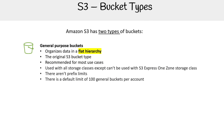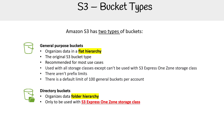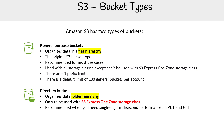Now let's talk about the new bucket type, which is directory buckets. As the name suggests, it organizes data into a folder hierarchy, which is a little different for object storage. It can only be used — at least at this time — with the S3 Express One Zone storage class. This is recommended when you need single-digit millisecond performance on put and get, which is exactly what that S3 Express One Zone storage class provides, and we'll cover that in another slide.